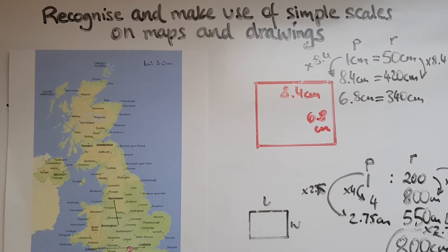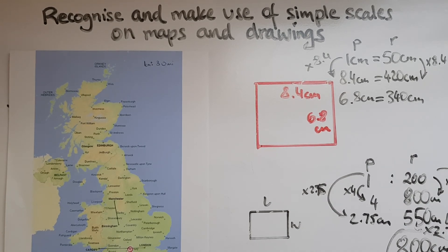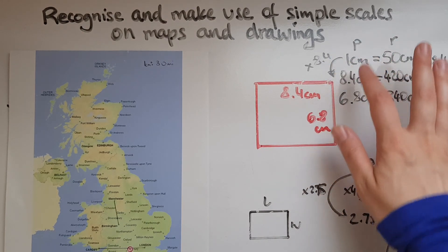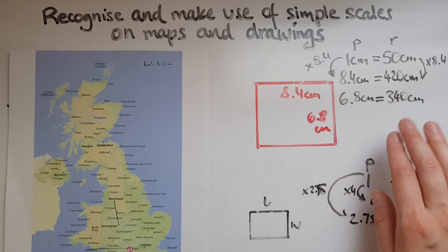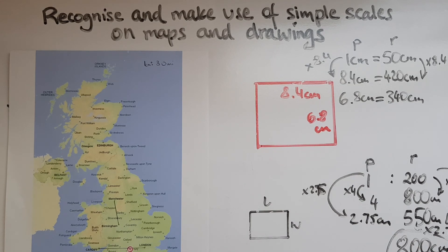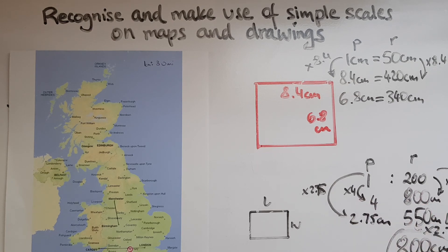The important thing is to write the scale or ratio first, then identify whether the information given is on the map or in real life, and place it on the correct side. Everything related to the plan goes on one side, and real life on the other. Also pay attention to units: if the scale has no units, you choose the unit and keep it consistent — both sides will be in the same unit throughout.